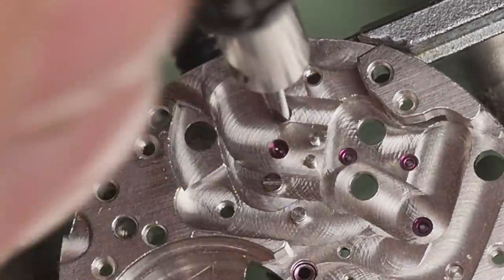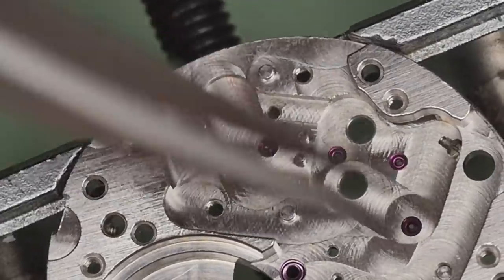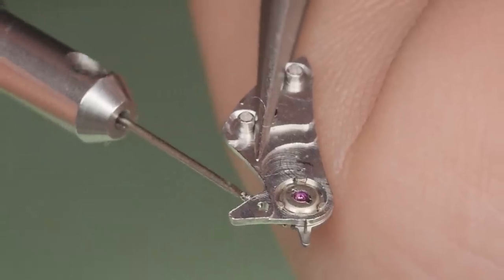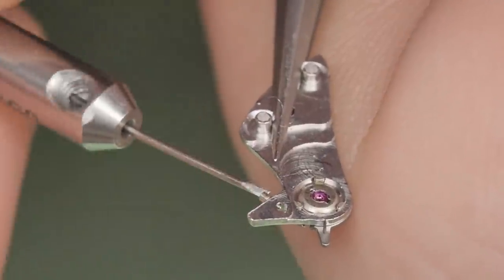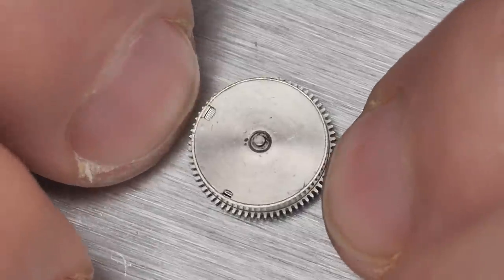Two more very tiny screws hold in the lower balance endstone cap. I lucked out that this little guy got hung up on the movement and didn't bounce around on my bench. As with the dial feet screws, I tighten the hairspring stud screw back down prior to cleaning. I failed to do this once and after fishing the screw out of the cleaning fluid, it took me what felt like forever to get it back into the hole.